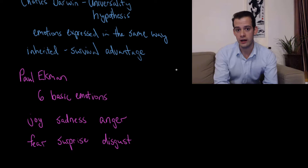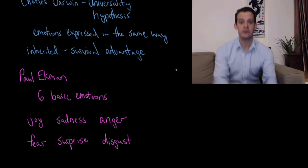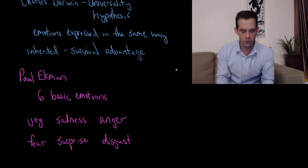Or we can look for expression through posture. So some studies have looked at athletes who are blind. And when they win a competition, what do they do? They stand up straight and they hold their arms in the air. And again, they've never seen somebody do that.